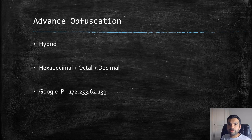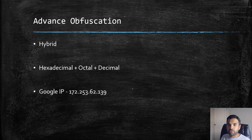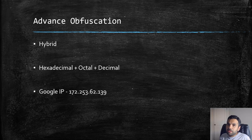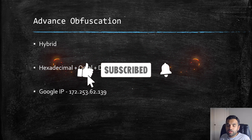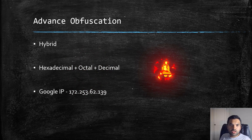We'll see how combining systems can even more confuse the user and also bypass some filters. Next, we are also going to see some JSFuck-like JavaScript techniques which you can use to construct your payload so you can easily bypass filters, confuse victims, and exploit cross-site scripting and other vulnerabilities. Please hit the thumbs up button if you haven't already, and let's get into it.